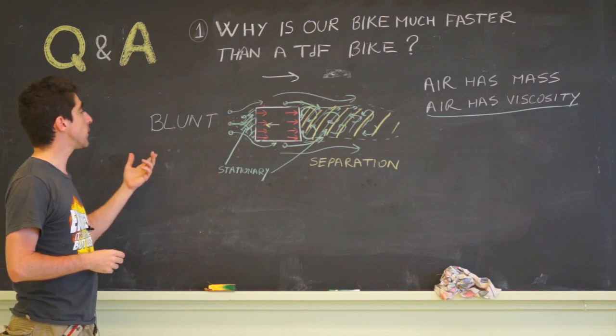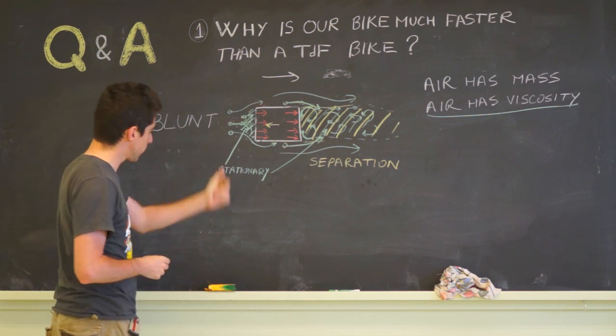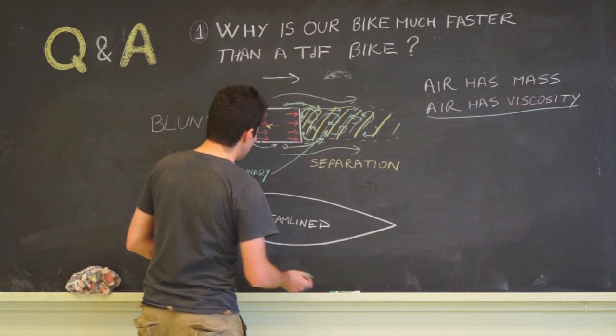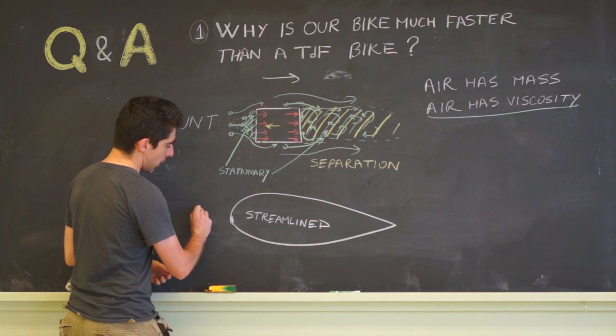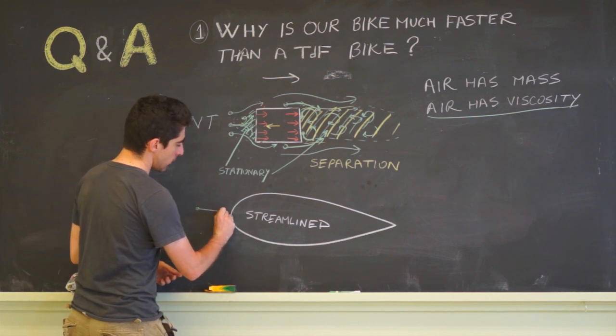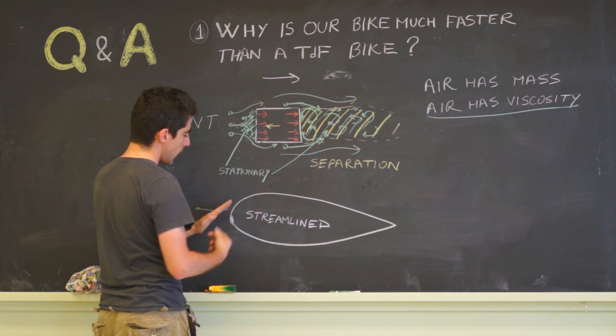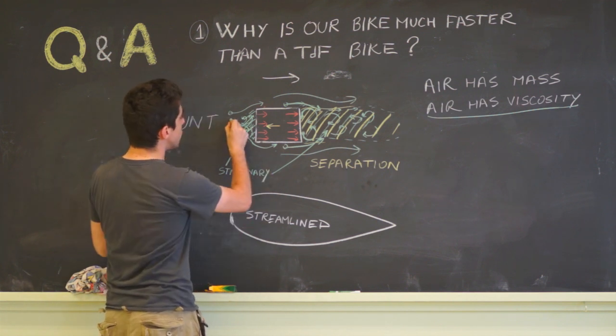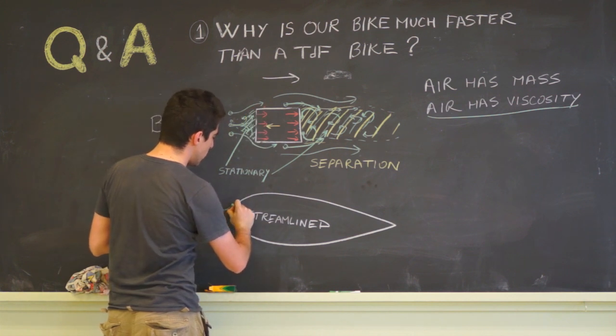Let's see how this blunt object compares with an object we call streamlined. So here we have a streamlined object. Let's see what happens with a particle of air. Now this particle gets close to the object and now it has to move at a less slope than this particle which would have to turn 90 degrees. So it's able to go right along the side of the object.